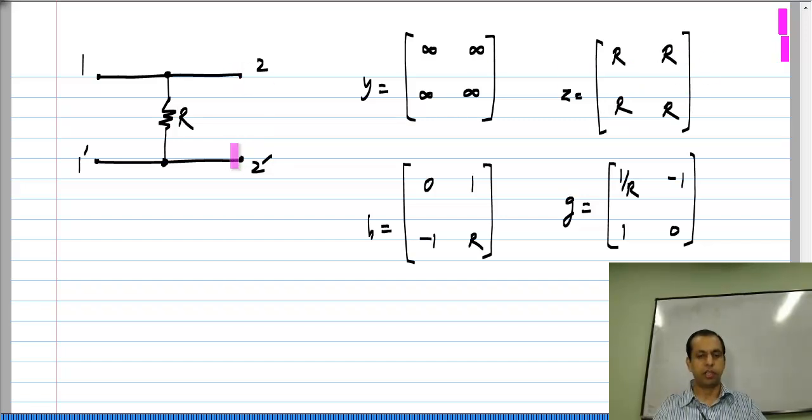Also, if you short-circuit this port, you have infinite conductance looking in from port 1. That also tells you that these parameters will be infinity. This is an example where Z, H, and G parameters are well-defined, but the Y parameters are not.